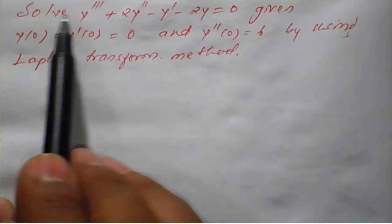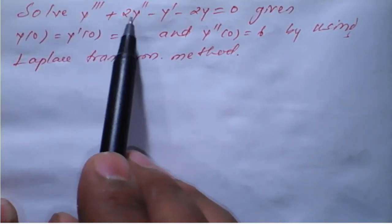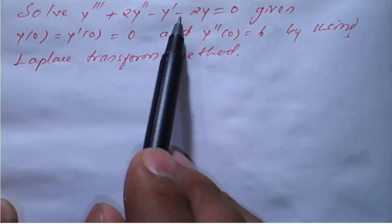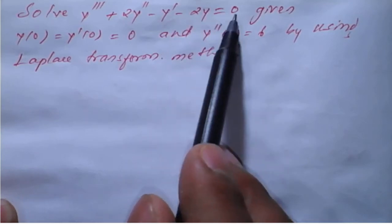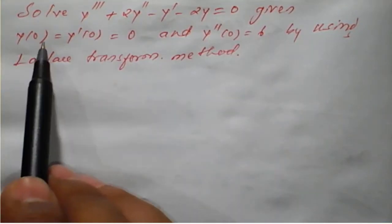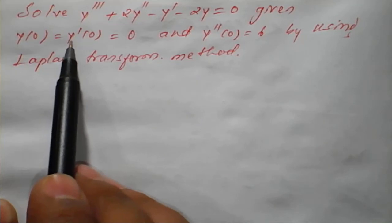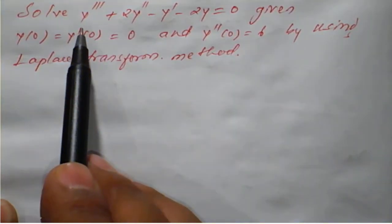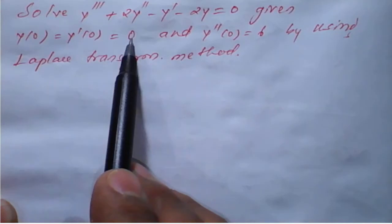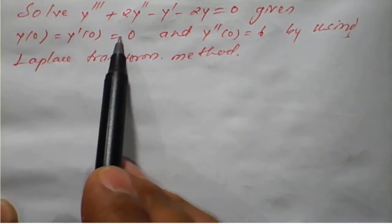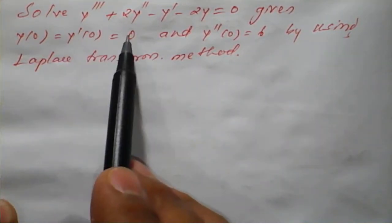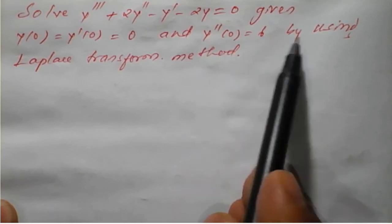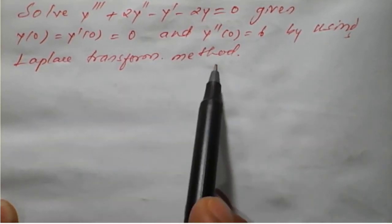The problem is: solve y triple dash plus 2 times y double dash minus y dash minus 2y is equal to 0, given y of 0 is equal to 0, y dash of 0 is equal to 0, and y double dash of 0 is 6, by using Laplace transform method.